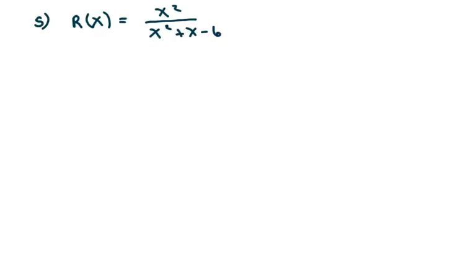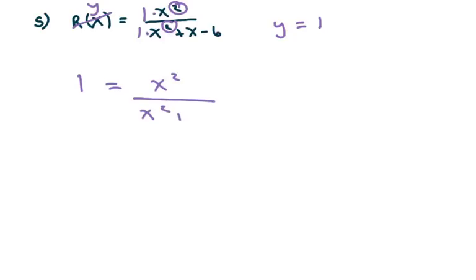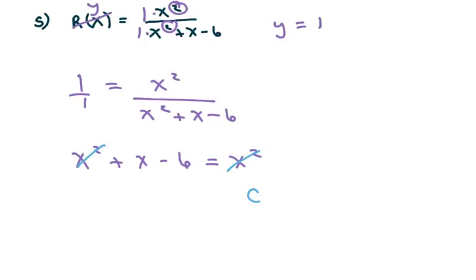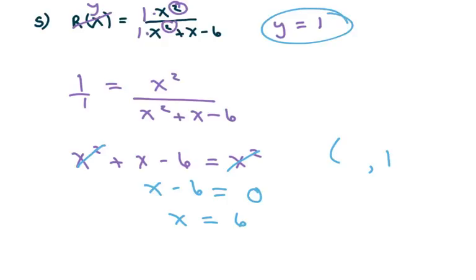The next one: the degrees are the same, so we take the lead coefficients and divide them, giving y equals 1. Setting 1 equal to x squared over x squared plus x minus 6 and cross multiplying gives x squared plus x minus 6 equals x squared. The x squared terms cancel, leaving x minus 6 equals 0, so x equals 6. When y is 1, x is 6.